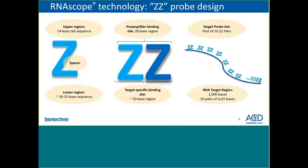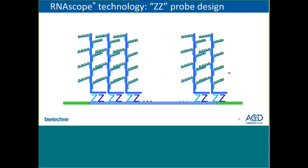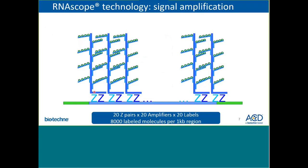For each target RNA, a pool of about 20 double Z target probe pairs spanning about 1,000 base pairs along a target molecule are designed to specifically hybridize to the target molecule but not to non-targeted markers. Once the preamplifier binding site is formed, signal amplification can take place. Similar to branch DNA, an L-shaped preamplifier molecule is added, which only binds when it sees the preamplifier binding site created by the tandem hybridization of both members of a double Z pair.